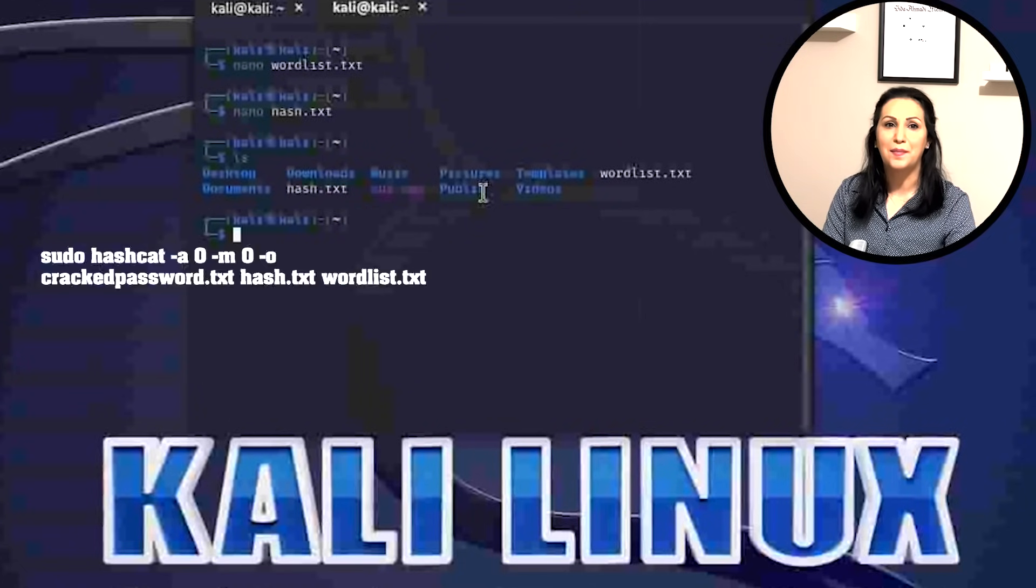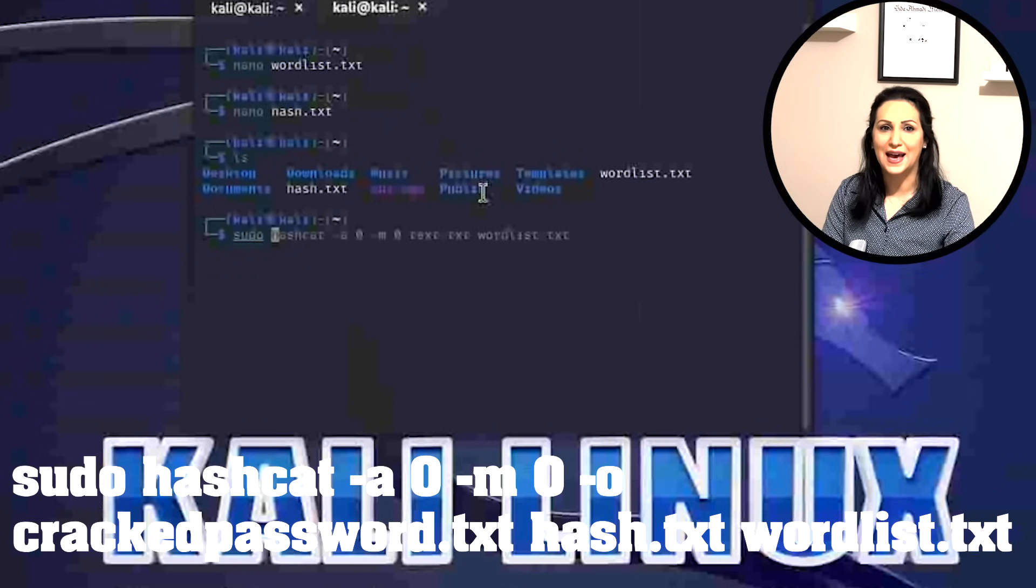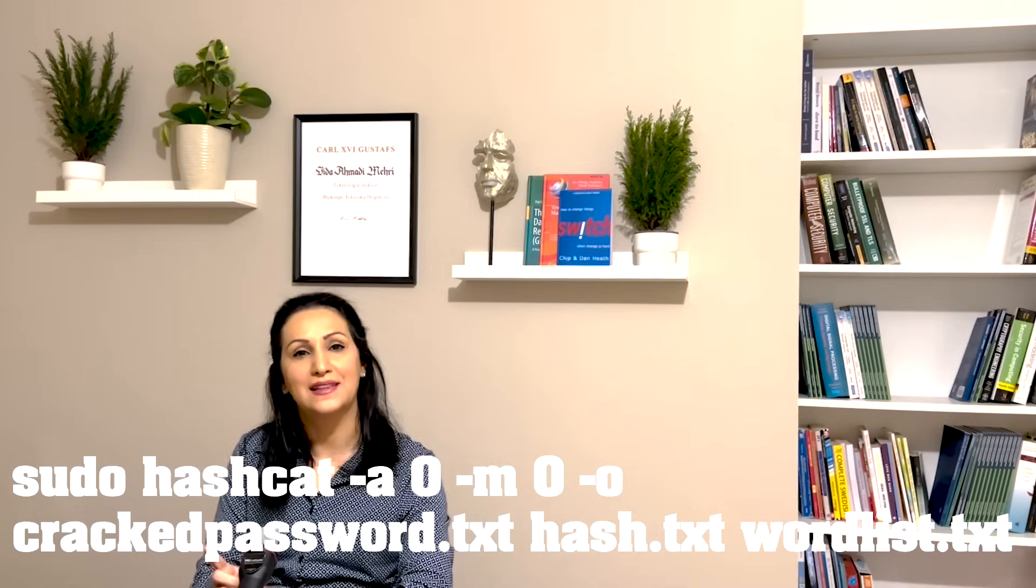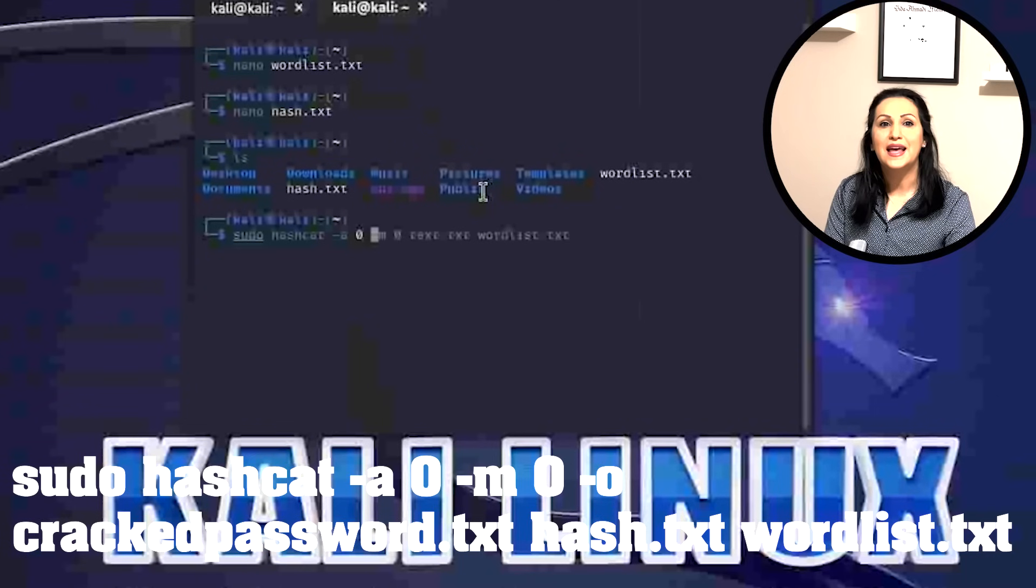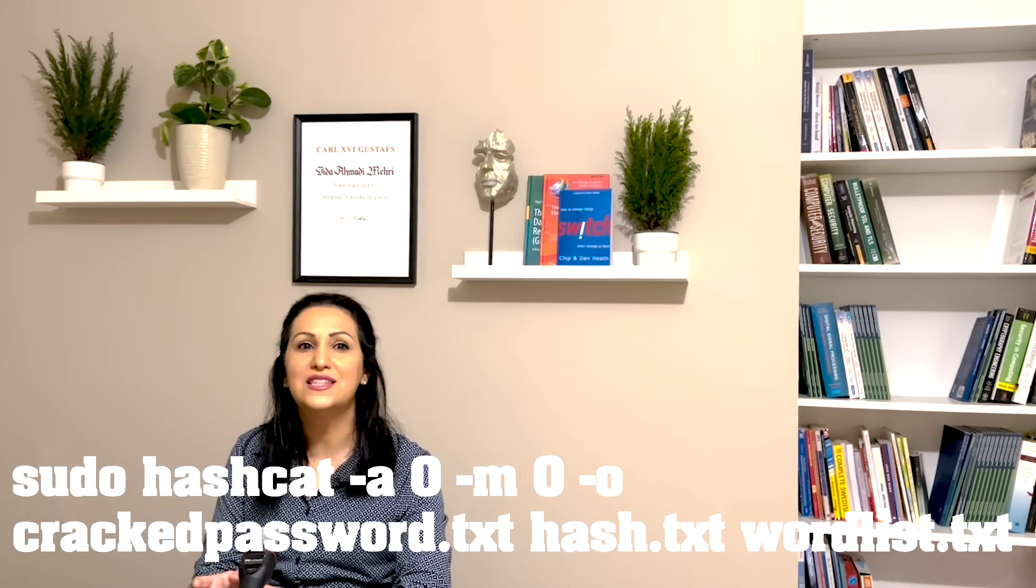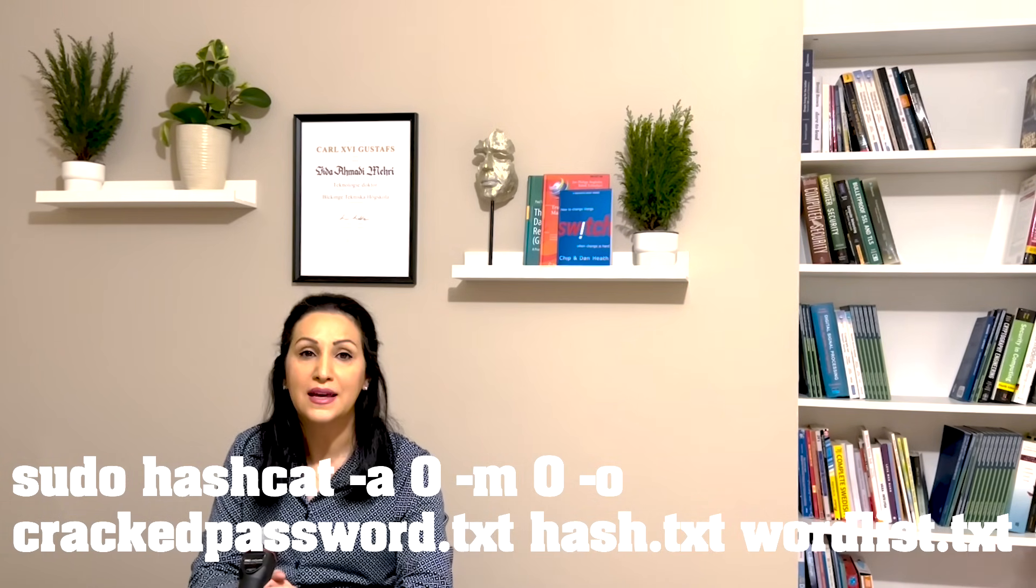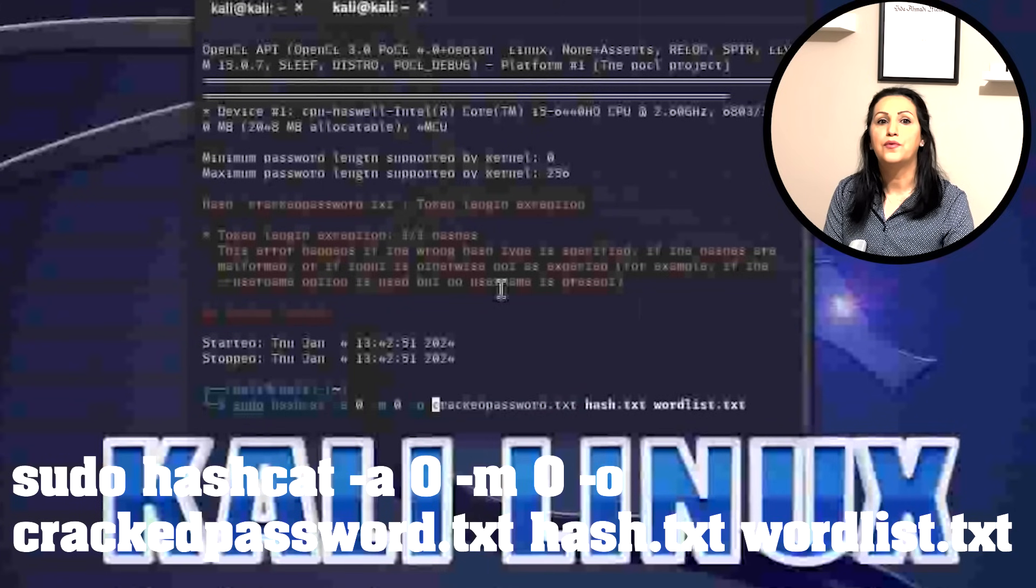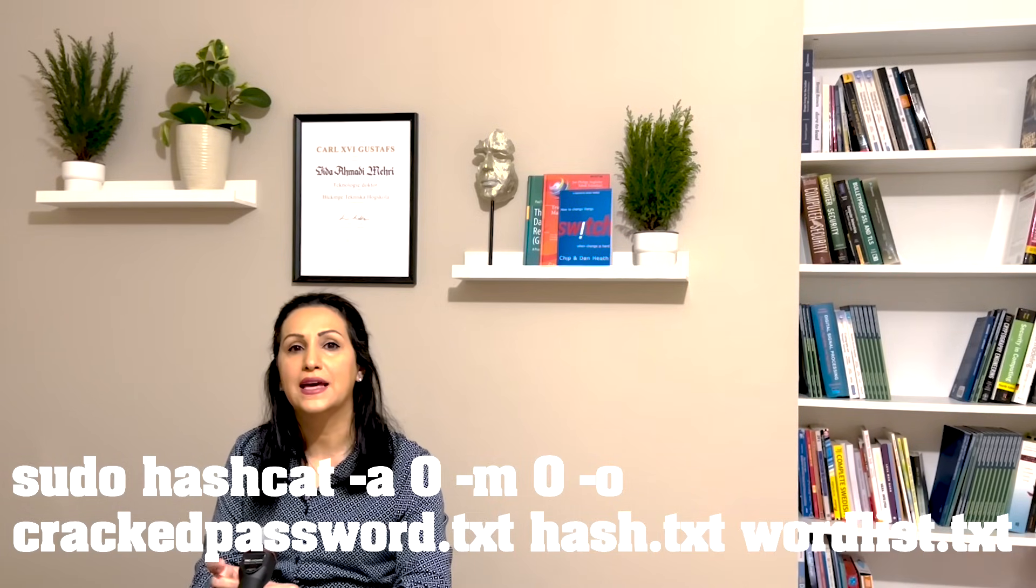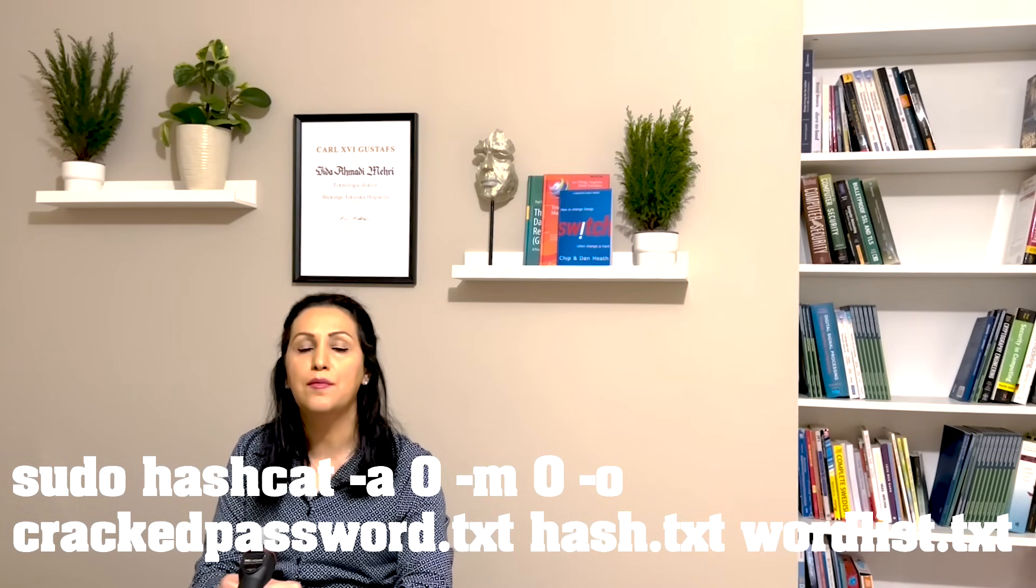Now let's run the command: sudo hashcat -a 0. I selected attack mode straight. -m 0, I used MD5 as it is easy to reverse and doesn't take long calculation time. -o provides the output and I specify the name of the file.